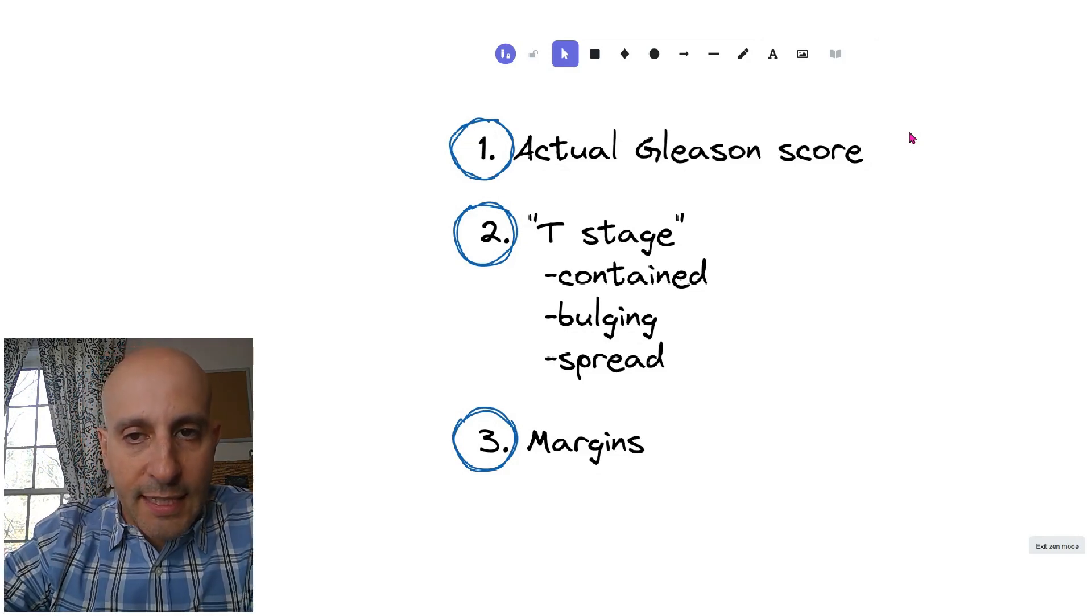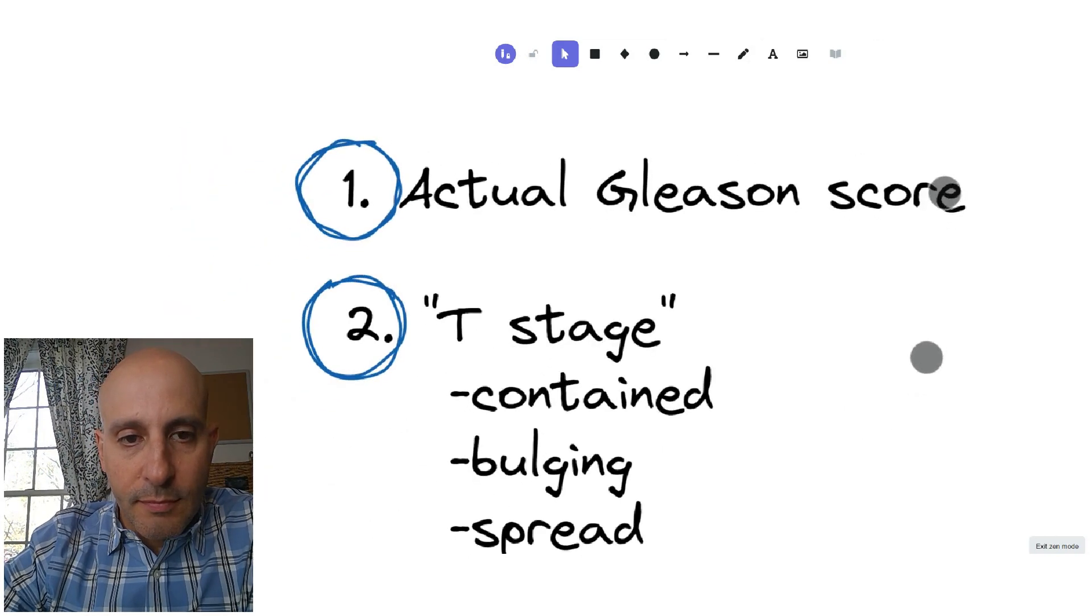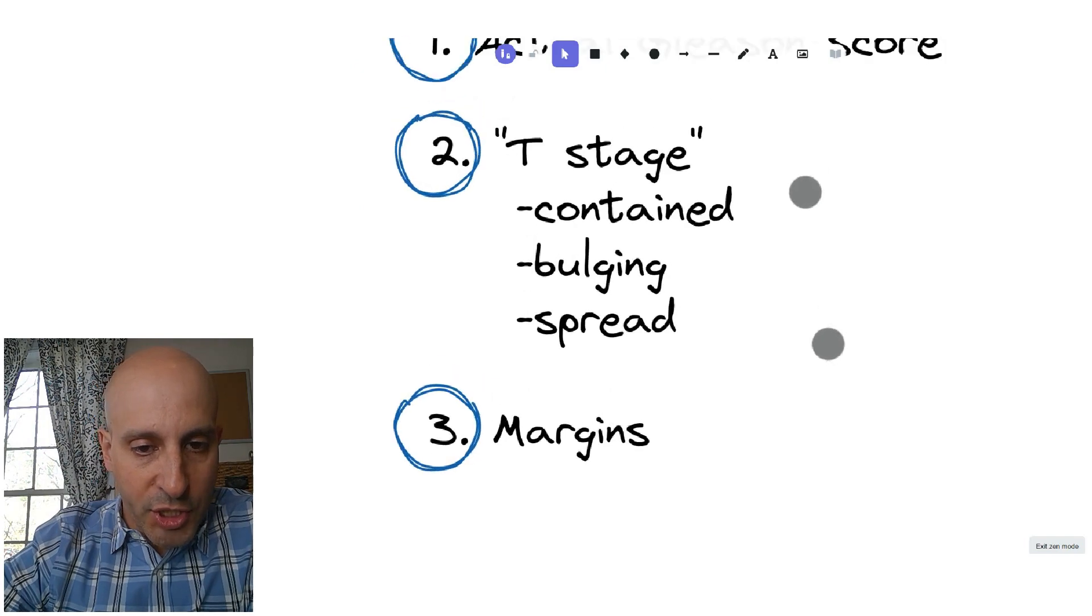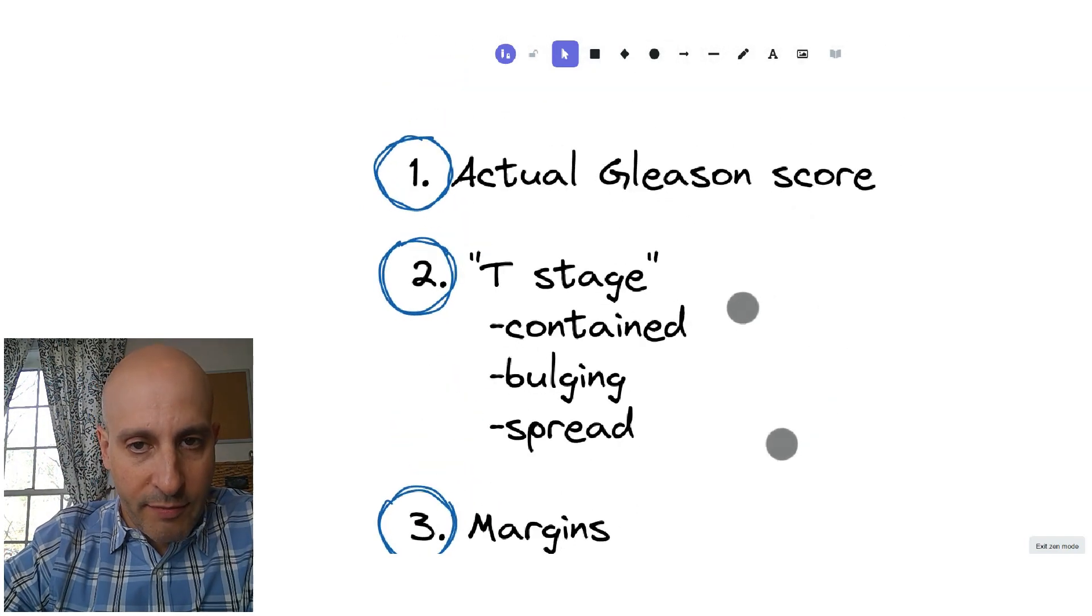The first is the actual Gleason score. The second is the T stage, or whether it's contained, bulging, or spread, and the status of the margins. I'm going to explain all three of these.